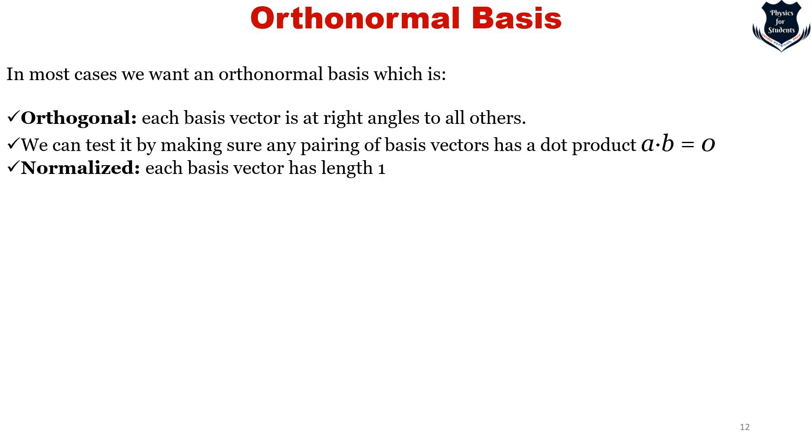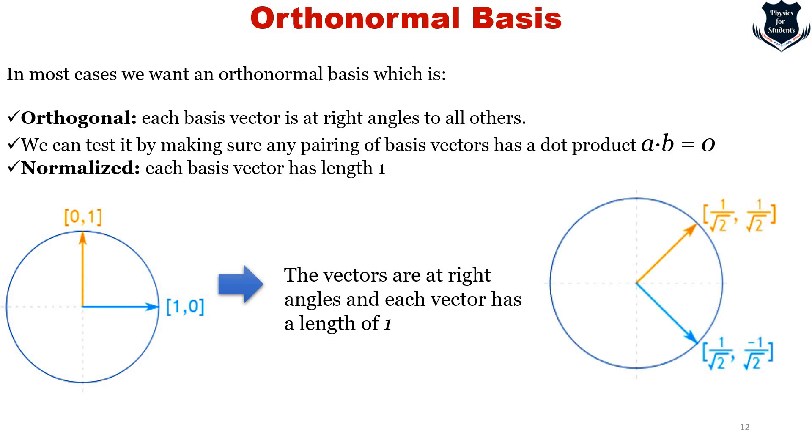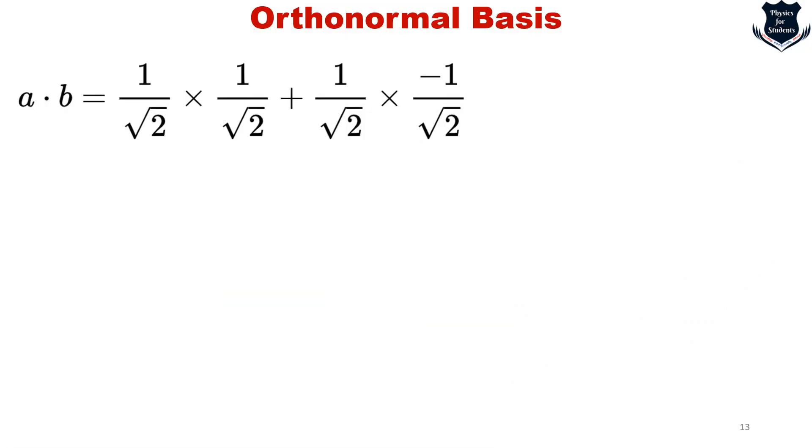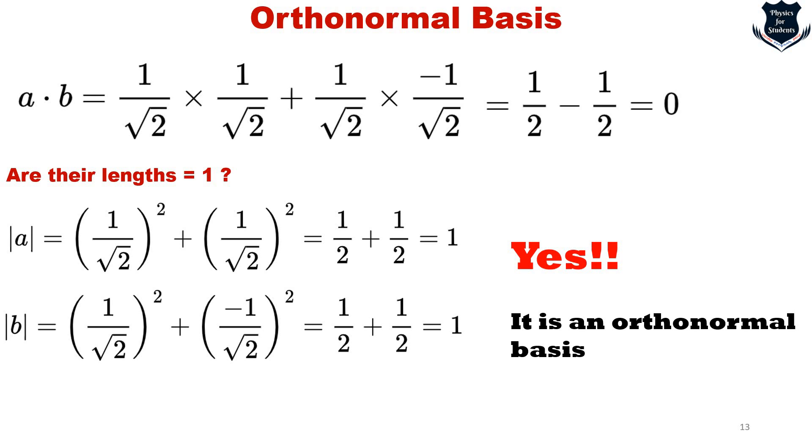In most cases we want an orthonormal basis, where each basis vector is at right angles to each other - A dot B equals 0. A normalized vector has a basis of length 1. Let's see an example: the vectors are at right angles and each vector is of length 1. We take the dot product and it results in 0, and we check if their lengths are 1. Because the lengths are 1, we can conclude the basis is orthonormal.